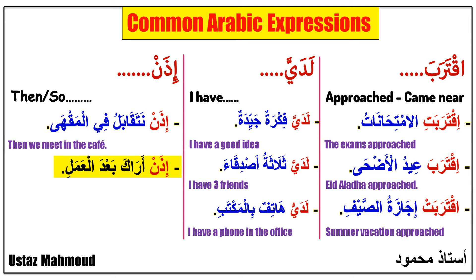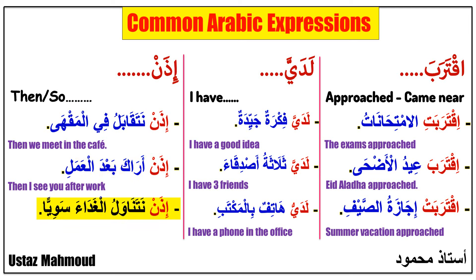Next phrase: 'Idhan araka ba'da al-'amal' — it means 'then I see you after work.' 'Idhan' means 'then,' 'araka' means 'I see you,' 'ba'da' means 'after,' 'al-'amal' means 'work.' Next phrase: 'Idhan natanawwal al-ghada sawa' — it means 'then we will have lunch together.' 'Natanawwal' means 'we have,' 'al-ghada' means 'lunch,' 'sawa' means 'together.'